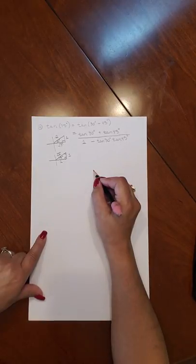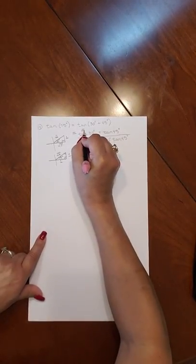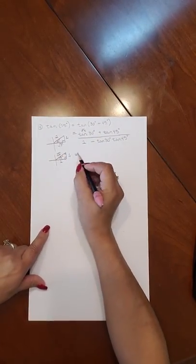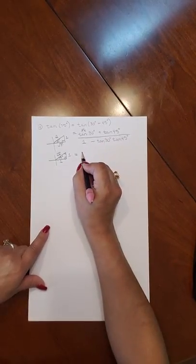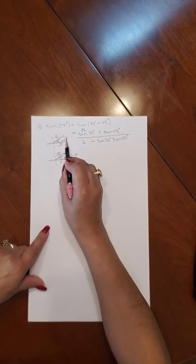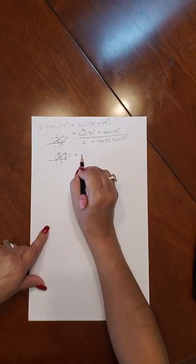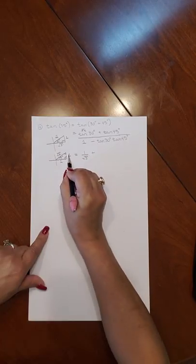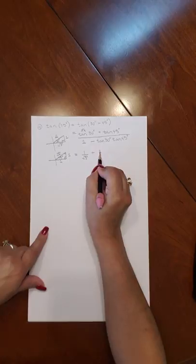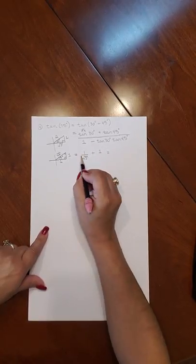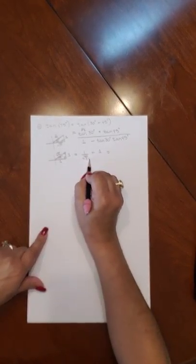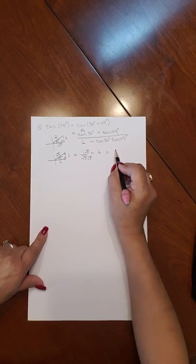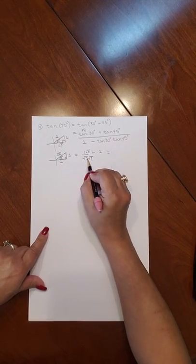For 45, the reference angle is 45, which makes the other angle 45 as well. If these two angles are equal, then the two legs are equal. You can assign any equal values to the legs; using 1 on each makes it easy to calculate the hypotenuse, which is square root of 2 times a leg. From these triangles you can form the tan. Tan of 30 is y over x, which is 1 over square root of 3. Tan of 45 is y over x, which is 1. To continue, rationalize the denominator by multiplying by square root of 3, giving you square root of 3 over 3.